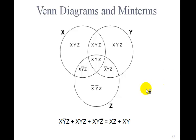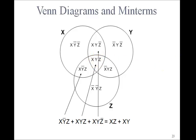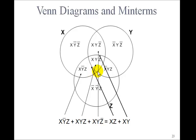We can ask, for example, is this a Boolean identity? Looking at the Venn diagram: x AND NOT y AND z is this little area; x AND y AND z is the centerpiece; and x AND y AND NOT z is another area. The left-hand side is the OR — the sum of all three areas. The right-hand side is x AND z plus x AND y. x AND z is this total football, x AND y is this football. Sure enough, it's the same as the left-hand side.